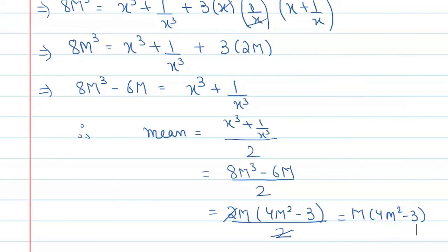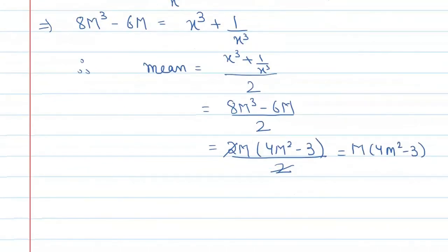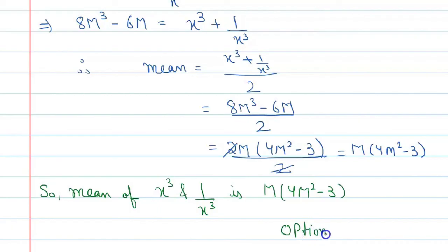Alright. So here we can write our final answer. So mean of x cubed and 1 by x cubed is M times 4M square minus 3, and the correct option is B. Alright. Thank you.